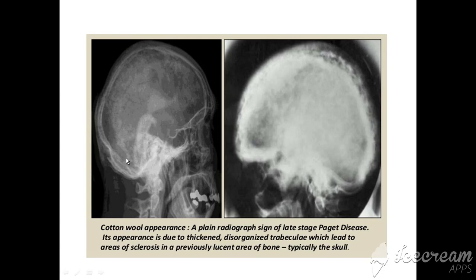This is the radiograph of the skull of a normal person. You can see there is smooth radiolucency and radiopacity with no much disturbance. These are the parietal bones of the skull. We can say there is uniform density of this area — there is no patchy opacity or patchy radiolucency. So this represents the normal radiographic features of the skull.